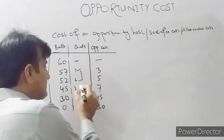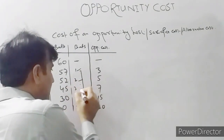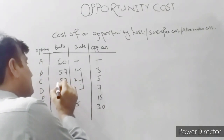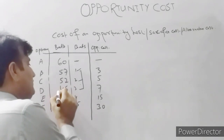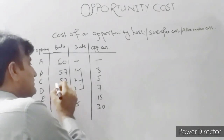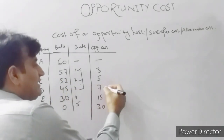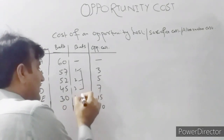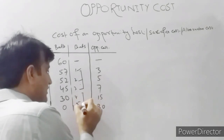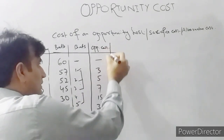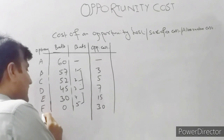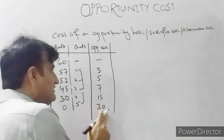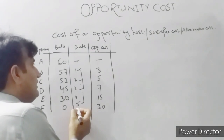By increasing another bat, he has to sacrifice further. Already he was producing at point C — 52 balls. Now at point D, he is producing 45 balls instead of 52, so he is sacrificing 7 balls. This is the opportunity cost of producing one bat. Finally, the producer can give up 30 units of balls and produce only 5 bats. So these are the different options available to the producer while producing different quantities of bats and balls.